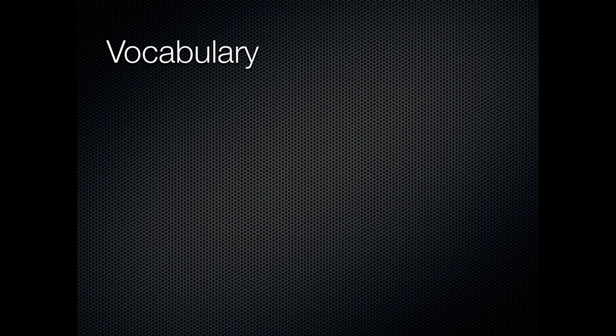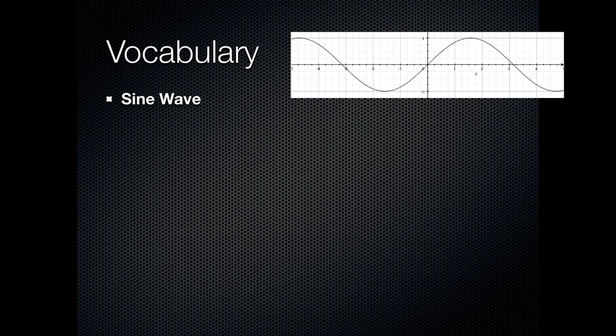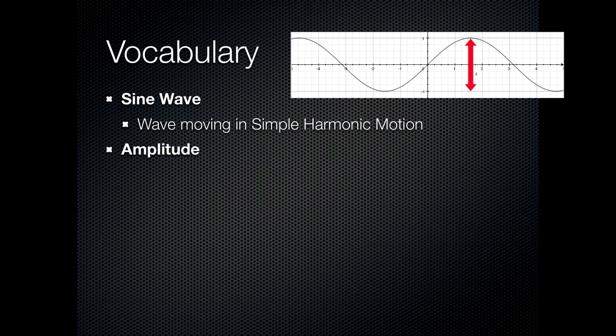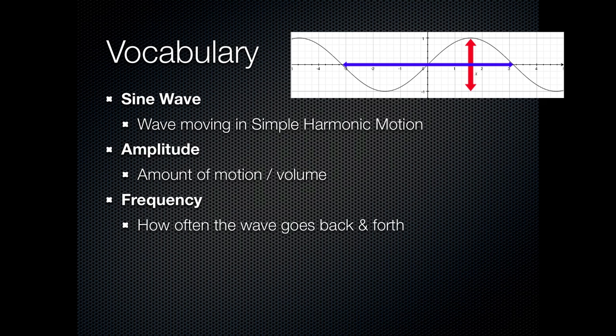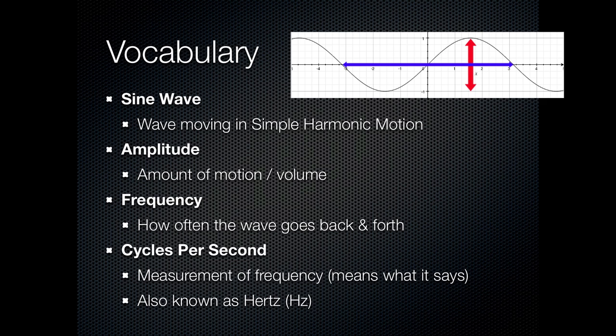So let's just check our vocabulary here. We've got the sine wave, which is a wave that moves in simple harmonic motion, a graph of the mathematical sine function. Amplitude, which is the amount of motion or volume. Frequency, which is how often the wave goes back and forth. And of course, cycles per second, which is hertz, or what we measure frequency in.